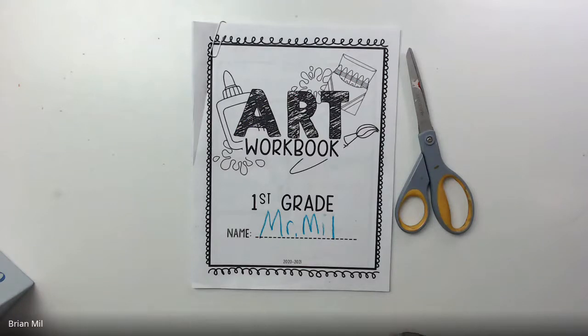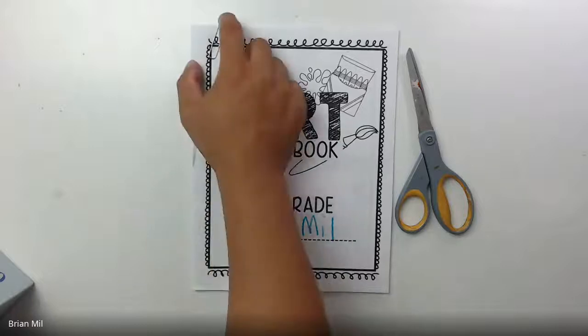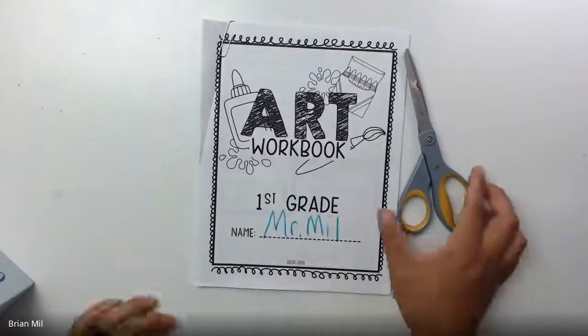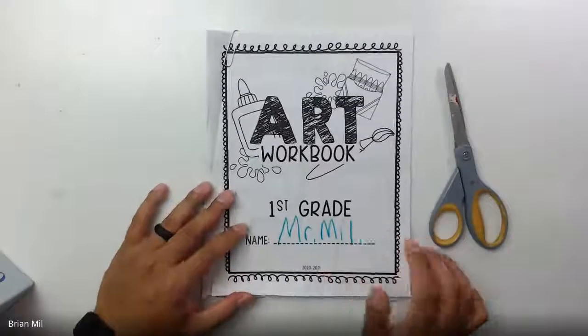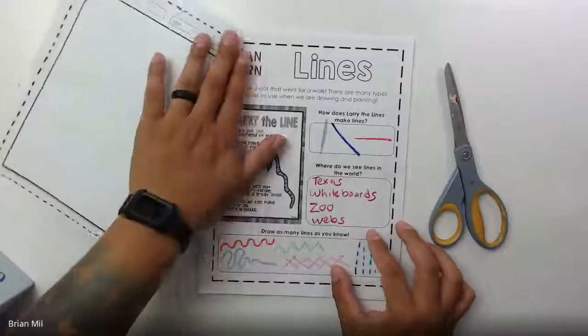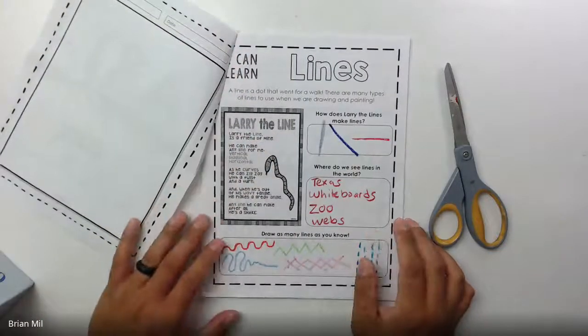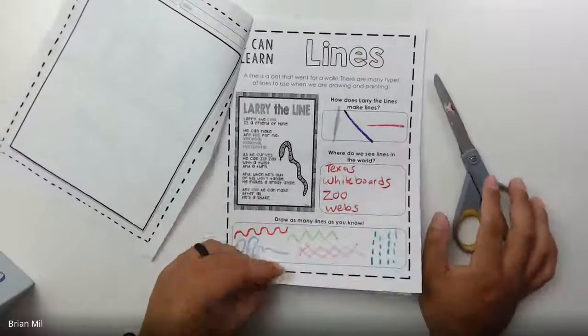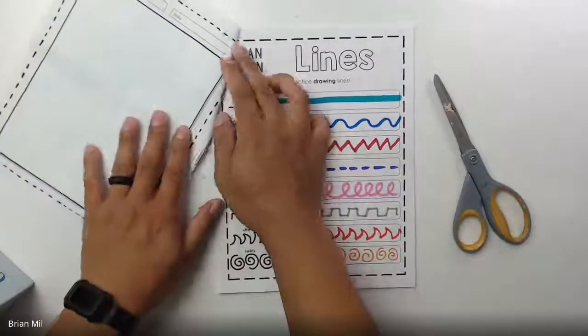We're going to start right away because I do want to make sure I don't run out of time. Let's go over what we've done so far. This art workbook is something that we've been working on. The first element of art we learned about was lines.